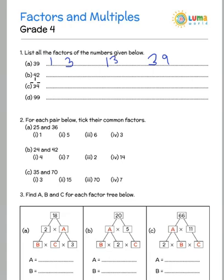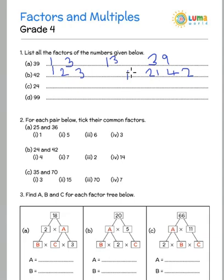Now let us look at 42. Start with 1 and 42 as factors. Does it go in the 2 times table? Yes, it ends in 2, so 2 multiplied by 21. Does it go in the 3 times table? Yes, 3 multiplied by 14. It does not go in the 4 times table. What about 6? 6 multiplied by 7. So these are the factors of 42.